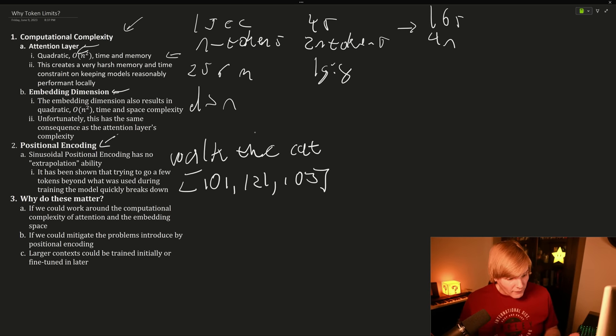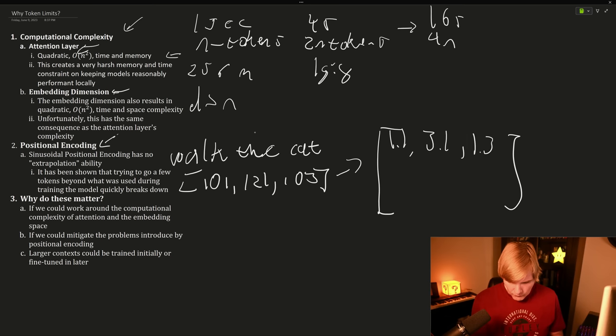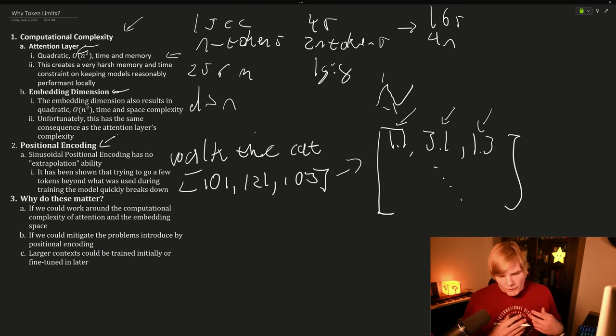And then we're going to embed these. Remember, our embedding dimension times our number of tokens gives us our matrices. So if we have a three dimensional embedding, this will create a three by three matrix. And let's just say the values in it are 1.1, 3.1, 1.3, and so forth. And for each of these positions, we're going to add these alternating sines and cosines.